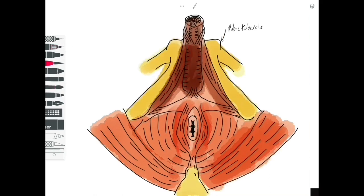Let's start at the top with the pubic tubercle, which would be next to the central pubic symphysis. Coming laterally on each side we have the ischial pubic ramus becoming the ischial tuberosity, a palpable landmark.